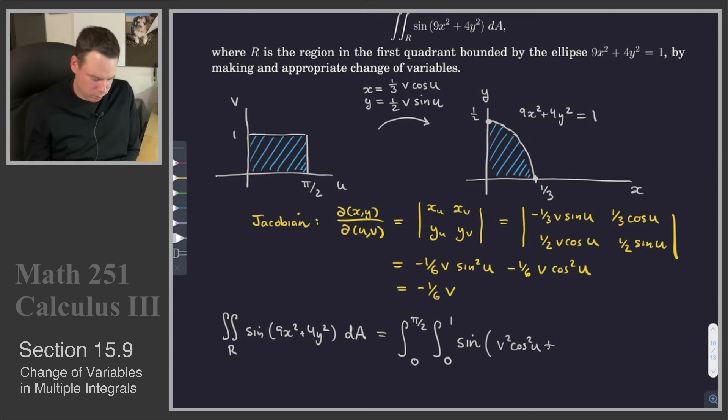Then I get a v² cos²u plus 4 times y², so 4 times (1/4), which would cancel off, v² sin²u. But sin²u + cos²u = 1, so this all just boils down to v. So there we go, it's sine v².